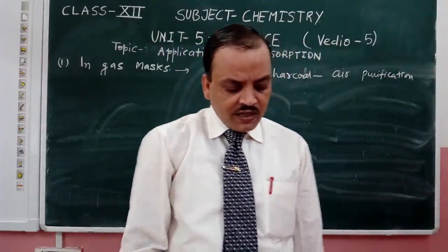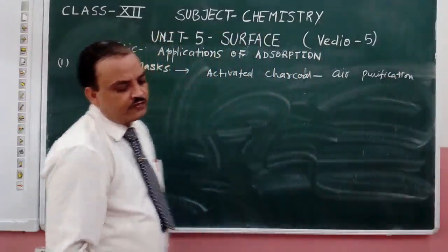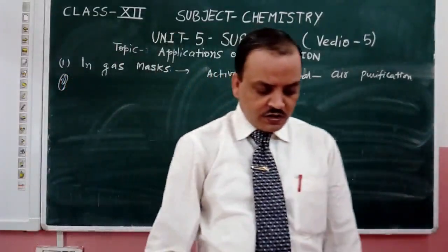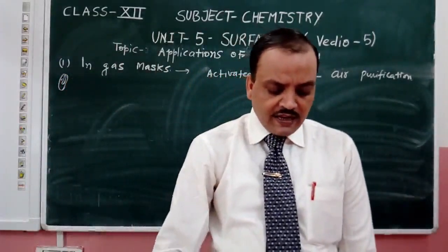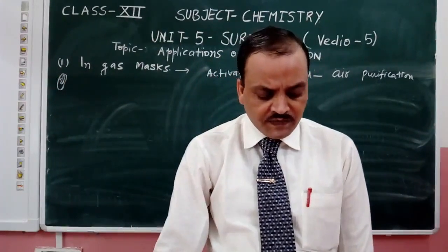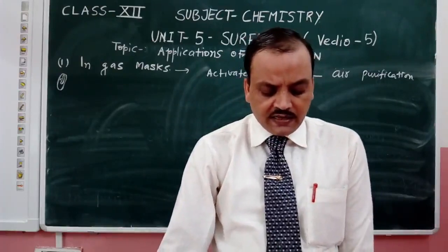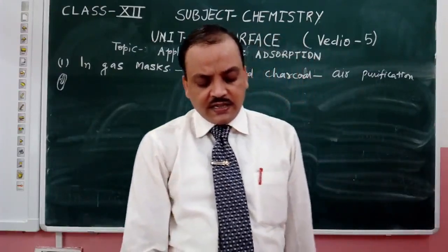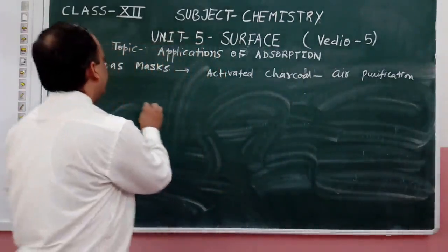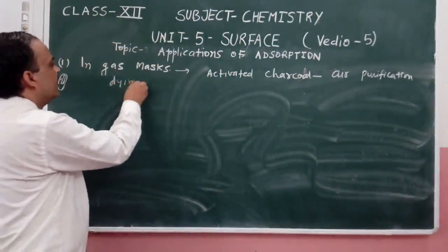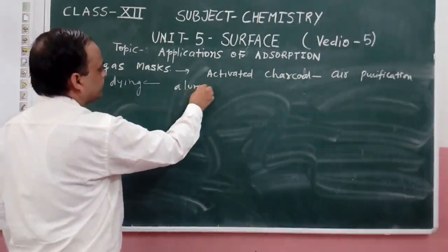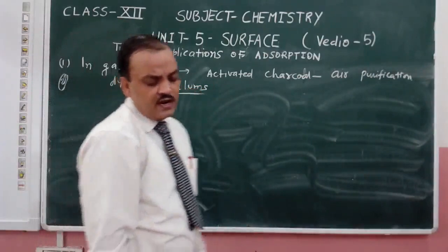Second application: dyeing of cloth. Mordants such as alums are used in dyeing of cloth. They adsorb the dye particles which otherwise do not stick to the cloth. So in the dyeing process, we use alums there.